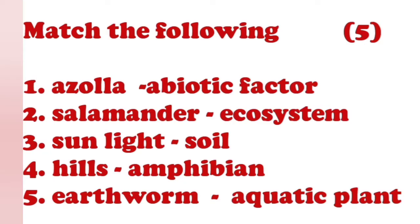Now we are moving on to the next activity, which is match the following. Here you can see: asola, abiotic factor, salamander, ecosystem, sunlight, soil, hills, amphibian, earthworm, and aquatic plant. Asola is not an abiotic factor — it is an aquatic plant.